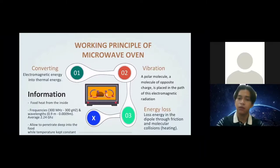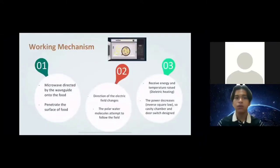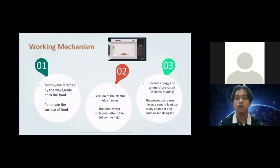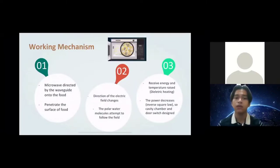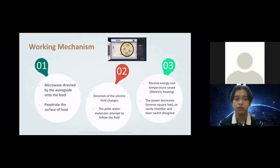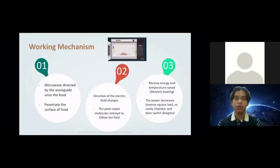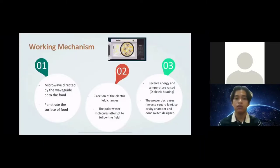Moving on to the working mechanism of the microwave oven. There are lots of components working inside, so I will explain in detail how it works to heat food. After the microwaves have been generated, they are directed by the waveguide onto the food in the oven. The microwaves penetrate the surface of food and reach the water molecules inside. As the direction of the electric field changes over time, the polar water molecules attempt to follow the field by changing their direction to move along the field lines in energetically favorable configurations.